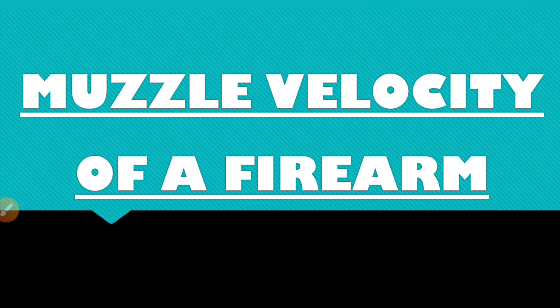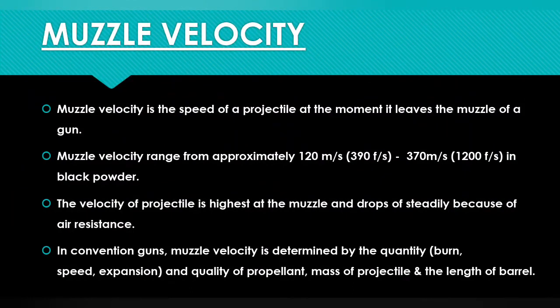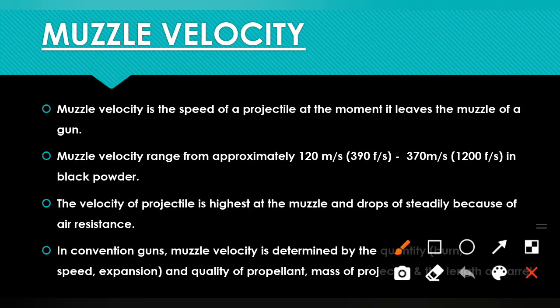Let's start today's topic without delay. First, let's see what muzzle velocity is. Muzzle velocity is the speed of a projectile at the moment it leaves the muzzle of a gun. When you fire, the projectile leaves the muzzle end of the firearm — at that particular point in time, the velocity of the projectile is maximum. So this is the muzzle velocity.